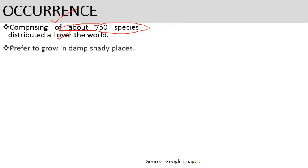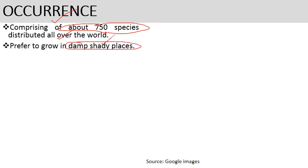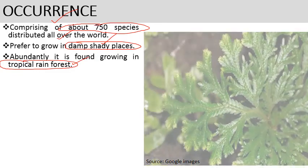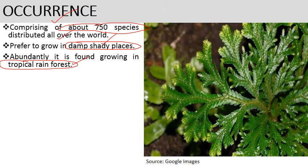Selaginella mostly prefers to grow in damp, shady places and is most abundantly found growing in tropical rainforests, where high humidity and sufficient temperature are present. It is commonly known as spike moss.